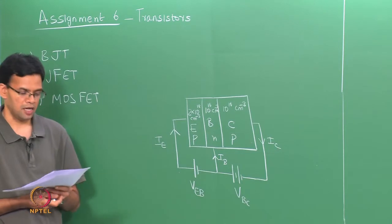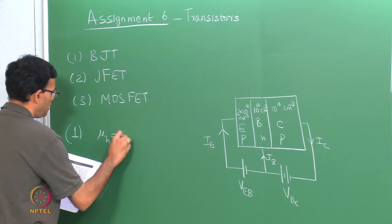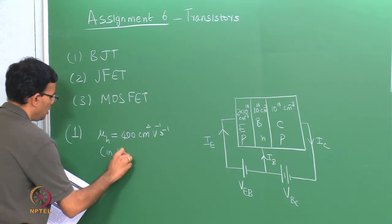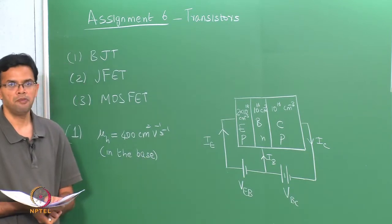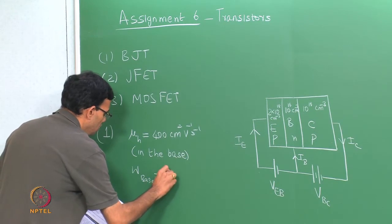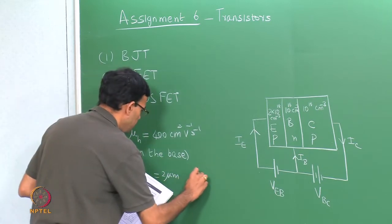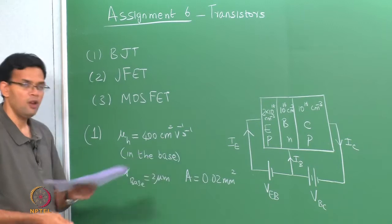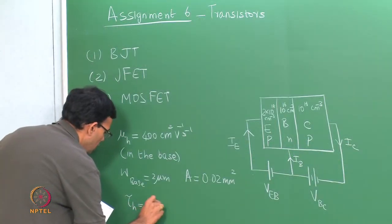Some of the holes which move into the base and get recombined are replenished by the external circuit and that forms the base current. Some of the numbers given are: the hole drift mobility μ_h in the base is 400 cm²/V·s. The width W of the base region is 2 micrometers and the device cross section A is 0.02 mm². The hole lifetime in the base is τ_h = 400 nanoseconds.